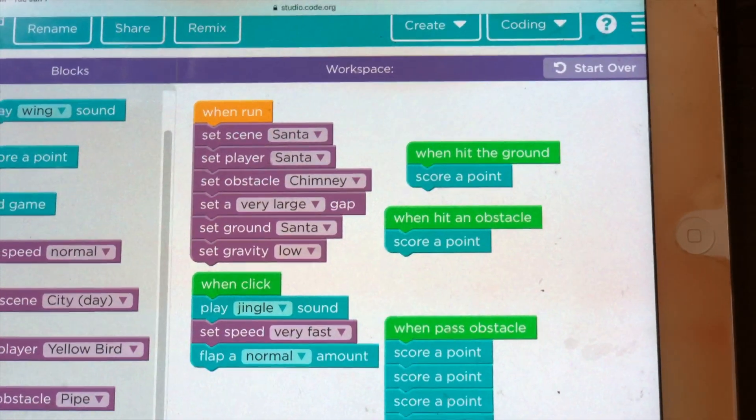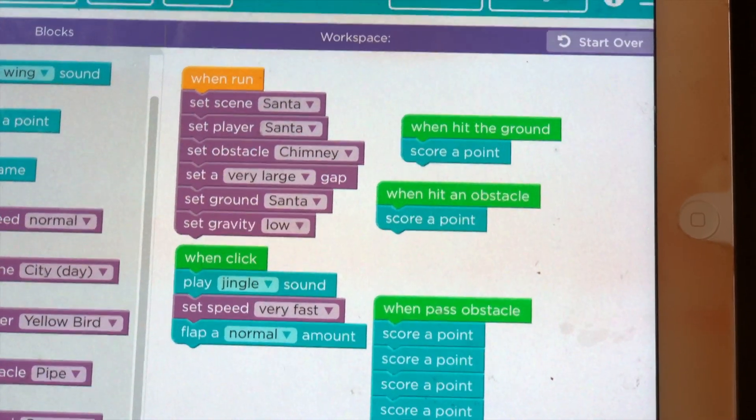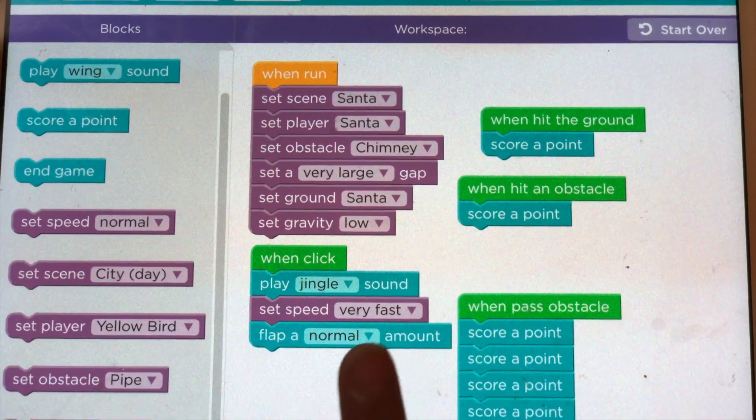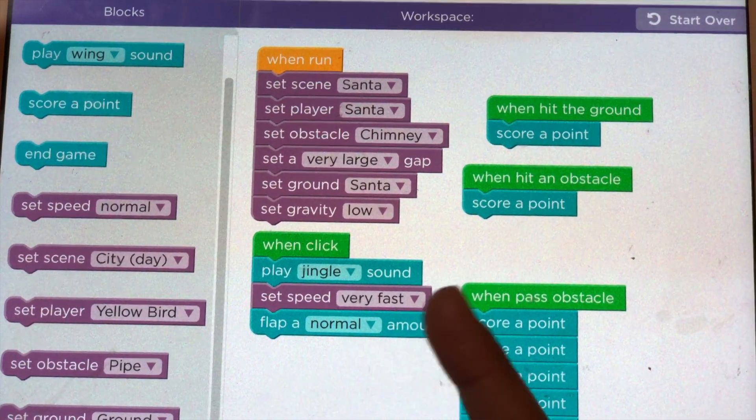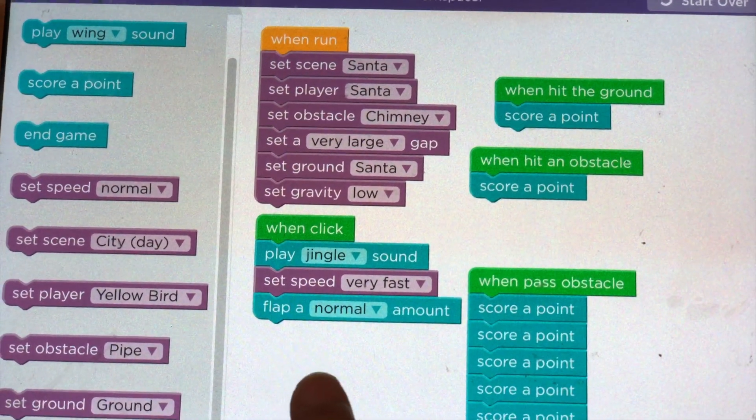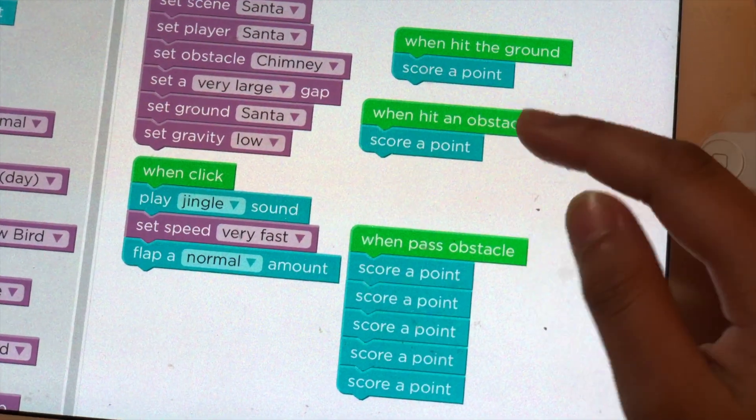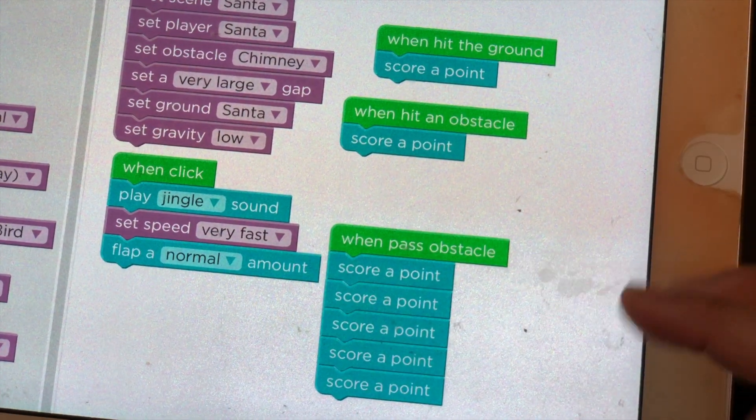The when run block explains what happens right at the start, so I'll show those changes right away. The when click block shows what happens when you tap or click. These are for when you hit the ground, hit an obstacle, or pass one.